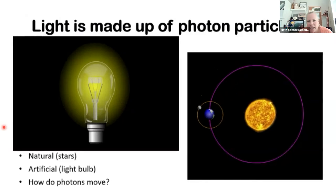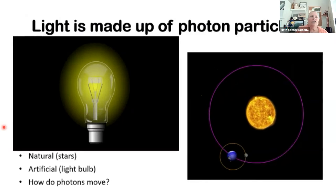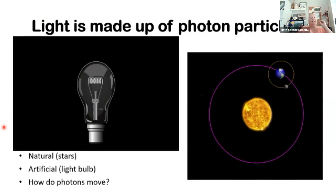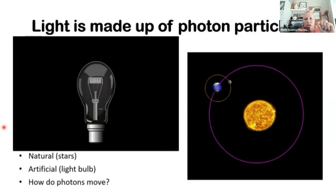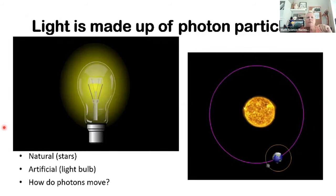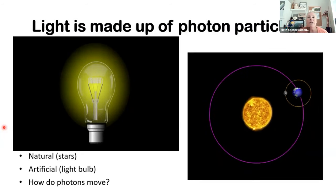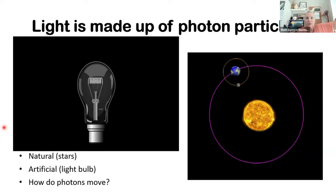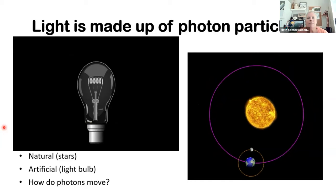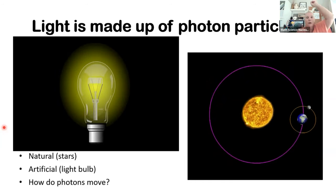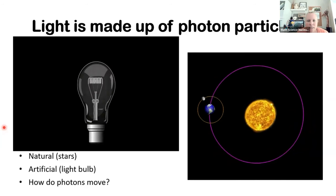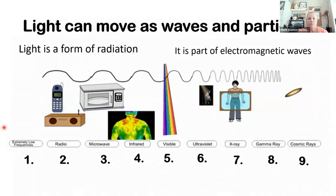Your topic has to do with light, shadows, and seasons. When we talk about light, we're talking about tiny little particles called photons. As these photons move around, they make lots of different kinds of light. We have natural light that comes from things like the sun, and we also have artificial light that comes from light bulbs — like those big fluorescent lights in your classroom.